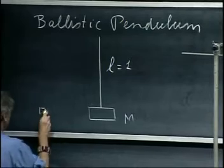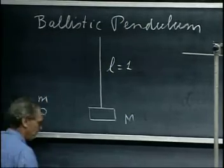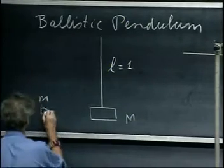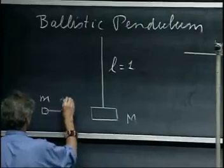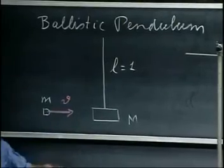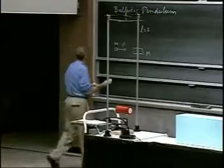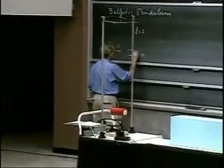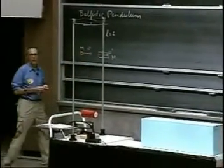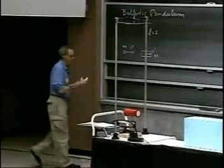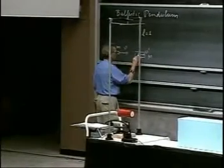And we have a bullet of mass little m, and the bullet comes in with velocity v, gets completely absorbed, sticks in there. It's a completely inelastic collision, and the pendulum will then pick up a velocity v prime with the bullet inside. The bullet is somewhere here.